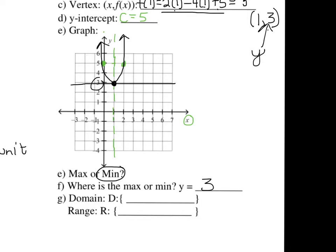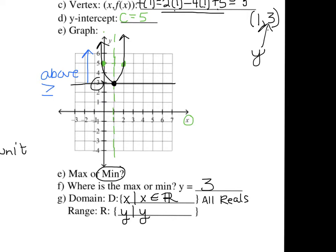Now we'll fill out the domain and range. You do need to memorize these for the quiz. I will accept if you write the words 'all reals' for the domain. Ideally you should write x, then the line that means 'such that,' and then write x is an element of the reals. For the range, you need to write y such that y is greater than or equal to 3. The entire parabola is above 3, so since it's above we're going to use the greater than or equal to sign. I will also accept 'all reals' for the domain if you're really worried.